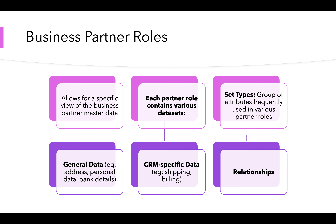Business partner roles: the function of a business partner role is to allow for a specific view of the business partner master data. There are three data sets involved in each business partner role: general data such as address, name, and personal data; CRM-specific data such as shipping and billing; and lastly, relationships between various different business partners.